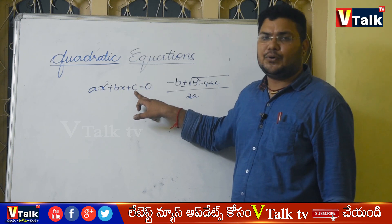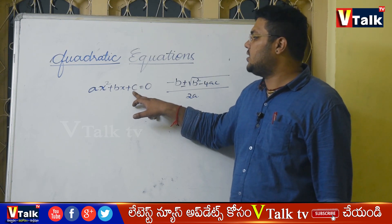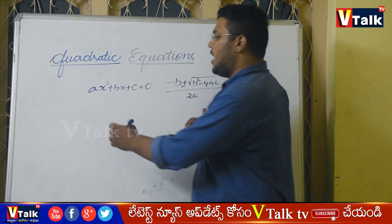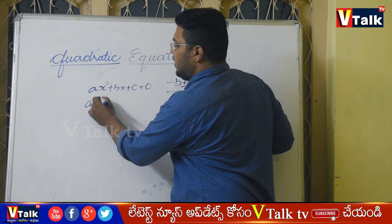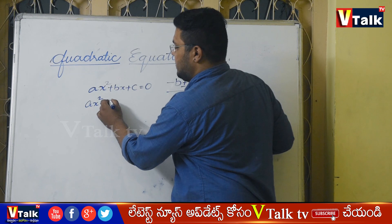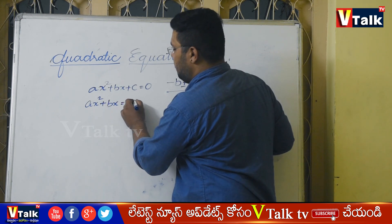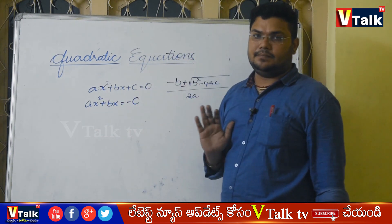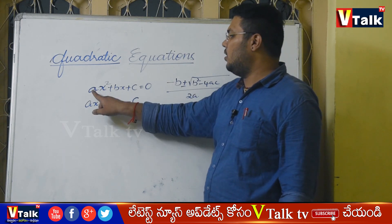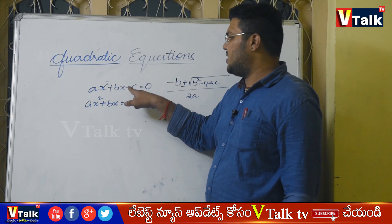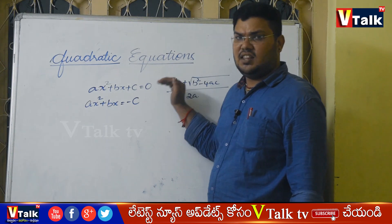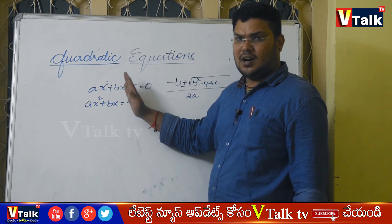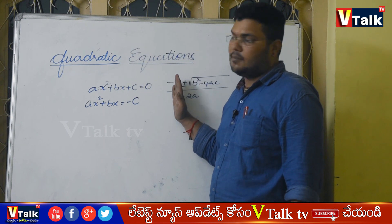Here, x squared is the variable squared term, bx is the term with x to the power 1, and c is the constant term. The first step: x squared plus bx equal to minus c. This is the first step.